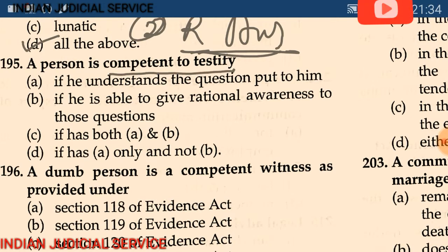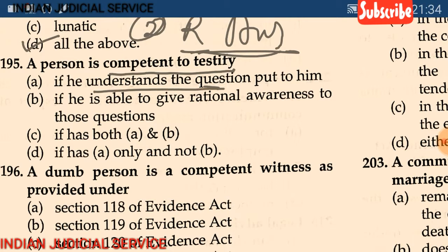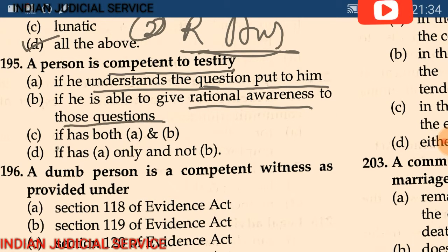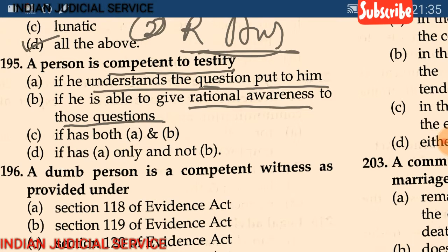Question 195: A person is competent to testify if — (A) they understand the question put to them, (B) they are able to give a rational answer to those questions, (C) if they have both A and B, (D) if they have only A, not B. The answer is option C: if they have both A and B.